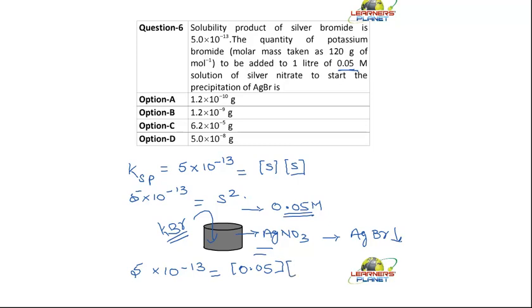This is the bromide concentration that we don't know, and we know the concentration of silver. Bromide is added in the form of KBr. So the concentration of bromide ions — that is, the concentration of KBr in the AgNO₃ solution — so that silver bromide precipitates, should be equal to Ksp divided by 0.05.